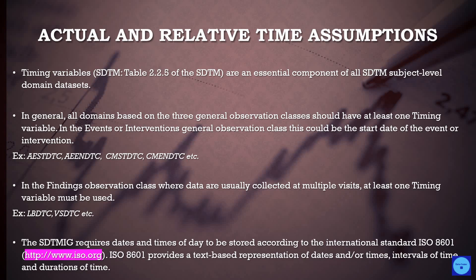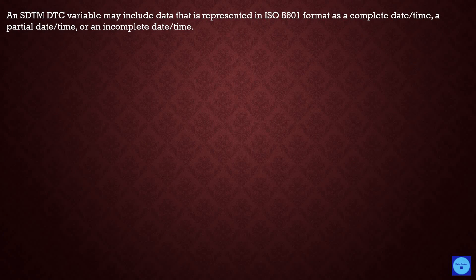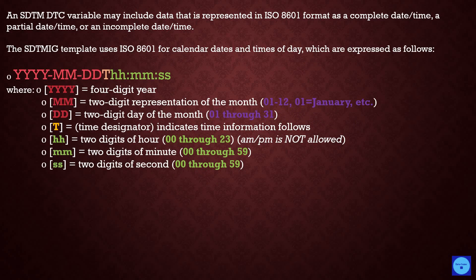The SDTM Implementation Guide requires dates and times of the day to be stored according to the international standard ISO 8601. ISO 8601 provides a text-based representation of dates and/or times, intervals of time, and duration of time. An SDTM DTC variable may include data represented in ISO 8601 format as a complete date-time, or a partial or incomplete date-time. The format is: YYYY-MM-DDThh:mm:ss, which is the complete ISO date and time format.